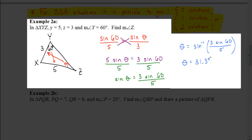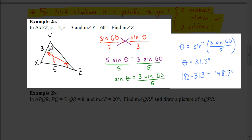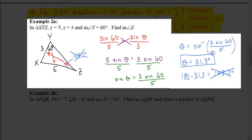Now, with SSA situations, we want to check to see if we get a second solution. The supplements theorem tells us that to find another angle with the same sine value, we subtract from 180. So 180 minus 31.3 gives us 148.7 degrees. The sine of 148.7 degrees technically gives the same value as the sine of 31.3, but we need to check if it makes sense in this triangle. If this angle were 148.7 degrees and we add that to 60 degrees, that's more than 180 degrees — so that is not possible. For this problem, there is only one solution: 31.3 degrees.